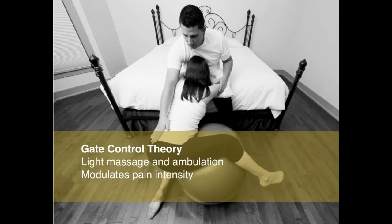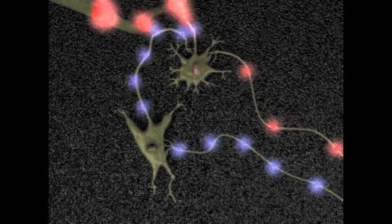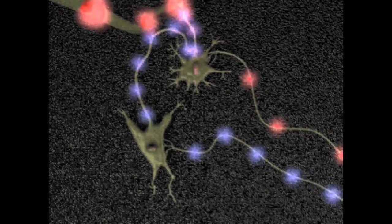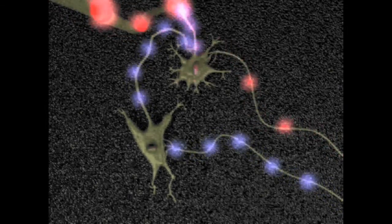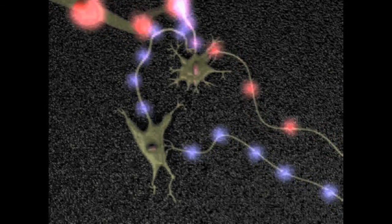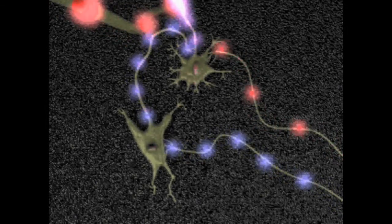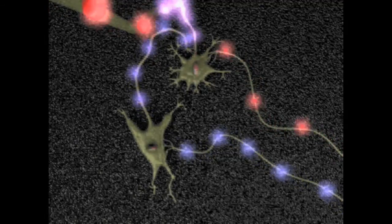The Gate Control Theory involves light massage and ambulation — specifically a light massage of the painful areas. This creates a blockage of part of the pain message in the spine, and it modulates mostly pain intensity.